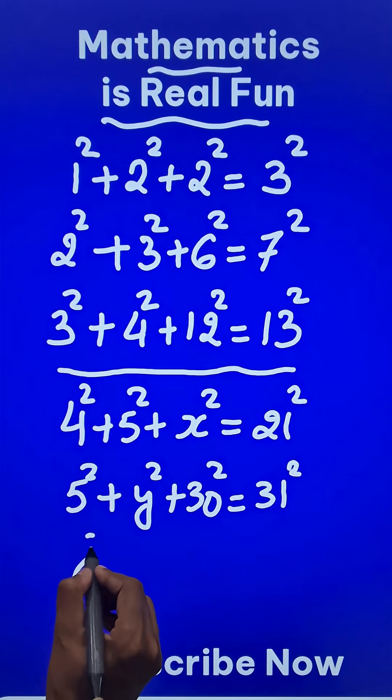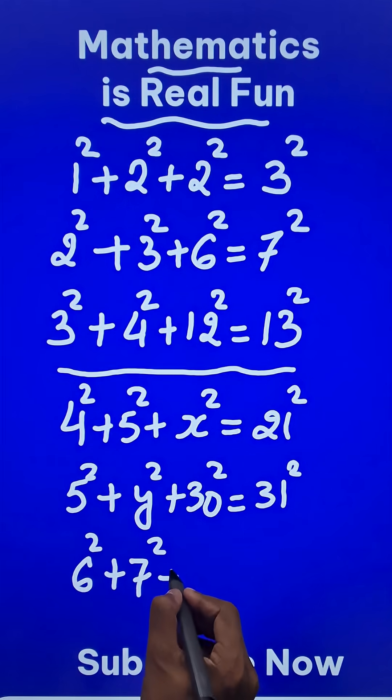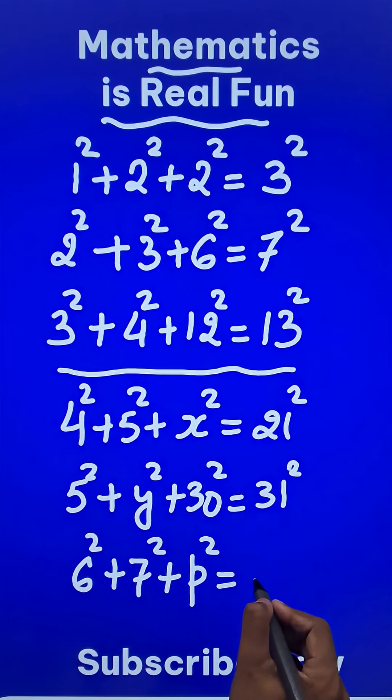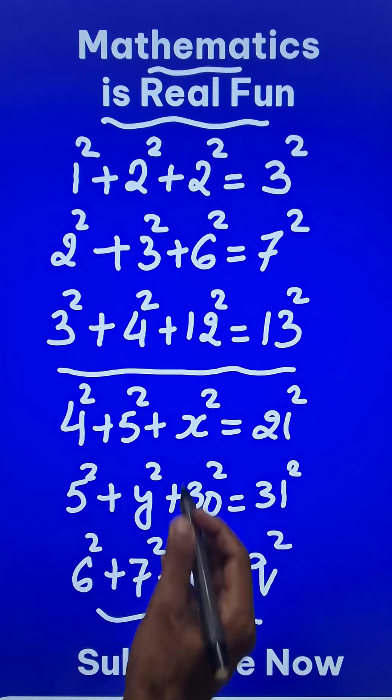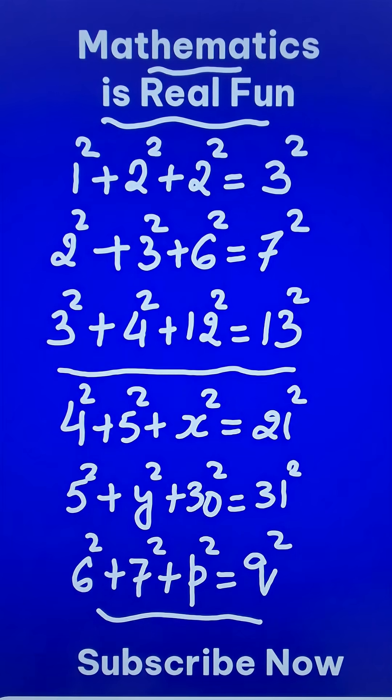And finally, 6 square plus 7 square plus p square equal to q square. So what replaces p and q? You will be very, very excited and surprised to know this amazing pattern.